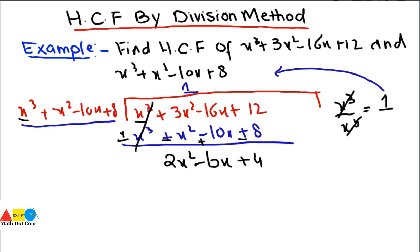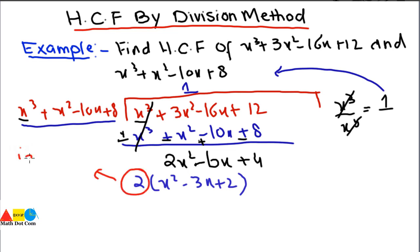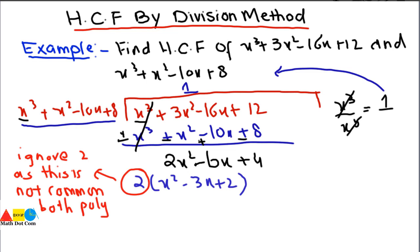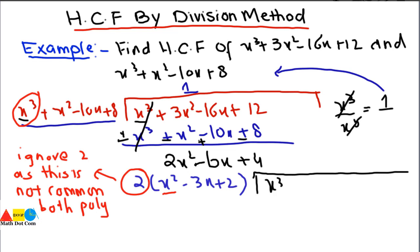Taking common from the remainder: factor out 2 to get 2(x² − 3x + 2). We drop the constant 2 since it is not common in both polynomials. We cannot proceed further with division here because the power of the remainder is smaller than the divisor. So in the successive division method, we make this remainder the new divisor and the previous divisor x³ + x² − 10x + 8 becomes the new dividend.